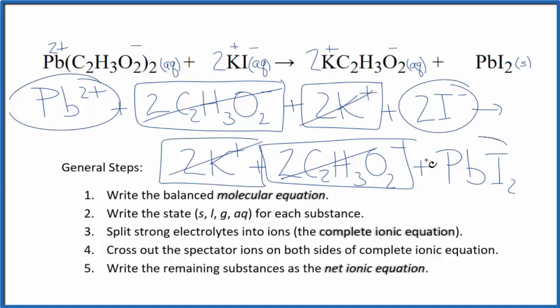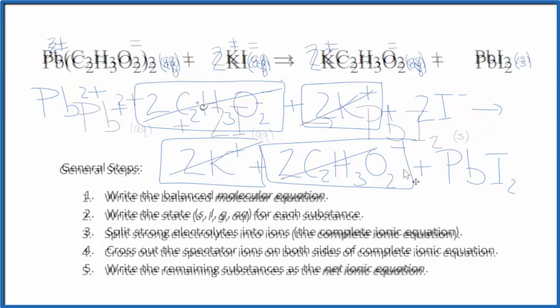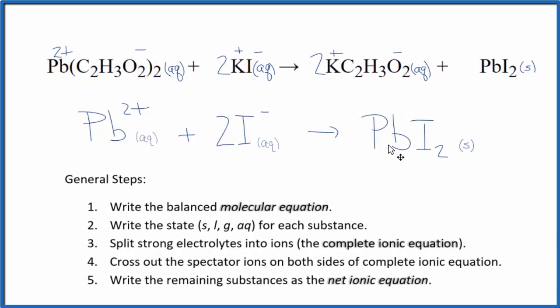This is the net ionic equation for lead 2 acetate plus potassium iodide. I'll clean it up and add the states in, and we'll have our net ionic equation. So this is the balanced net ionic equation for lead 2 acetate plus potassium iodide. You'll note that charge is conserved. We have 2+ here. Two times 1-, that's 2-. So these add up to zero. We have a neutral compound here. So the charge is balanced, and the atoms are balanced as well.